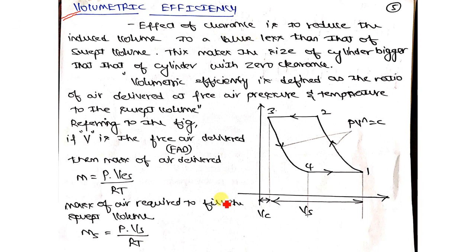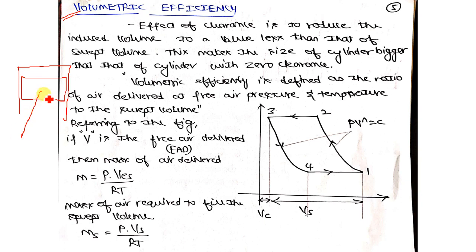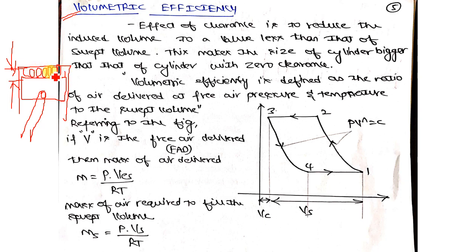What is a clearance volume? Here we have a piston and cylinder arrangement. The piston is at TDC — top dead center. When the piston is at TDC, it does not touch the cylinder head. There is some gap between the cylinder head and the piston surface. Whatever volume is left free in that gap is known as Vc, which is your clearance volume.